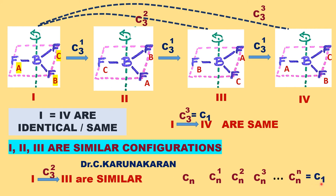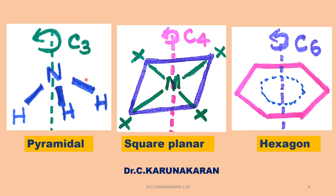Let us consider different molecules. For example, the pyramidal ammonia molecule: the highest order of axis of rotation is C3, so C3 is the principal axis of symmetry. For a square planar molecule, C4 is the highest axis of symmetry. For the hexagonal benzene molecule, C6 is the principal axis of symmetry.